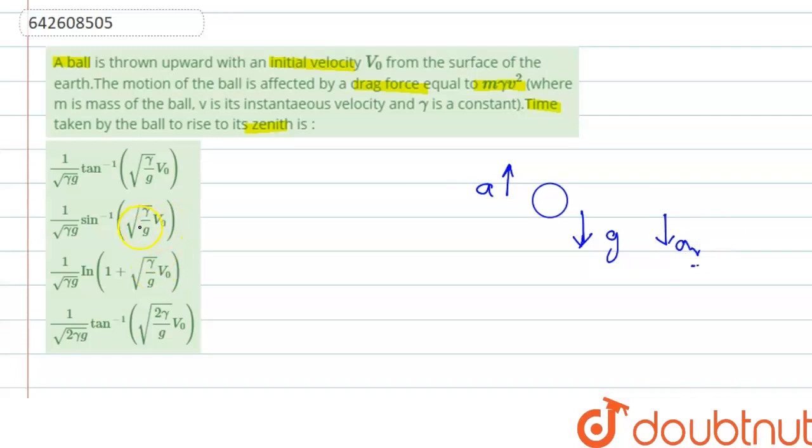So here we can say that the force of retardation is m gamma v square, it is given in the question. So from here we can write acceleration due to retardation will be m gamma v square by m, and m will be cancelled out, so this will be gamma v square.